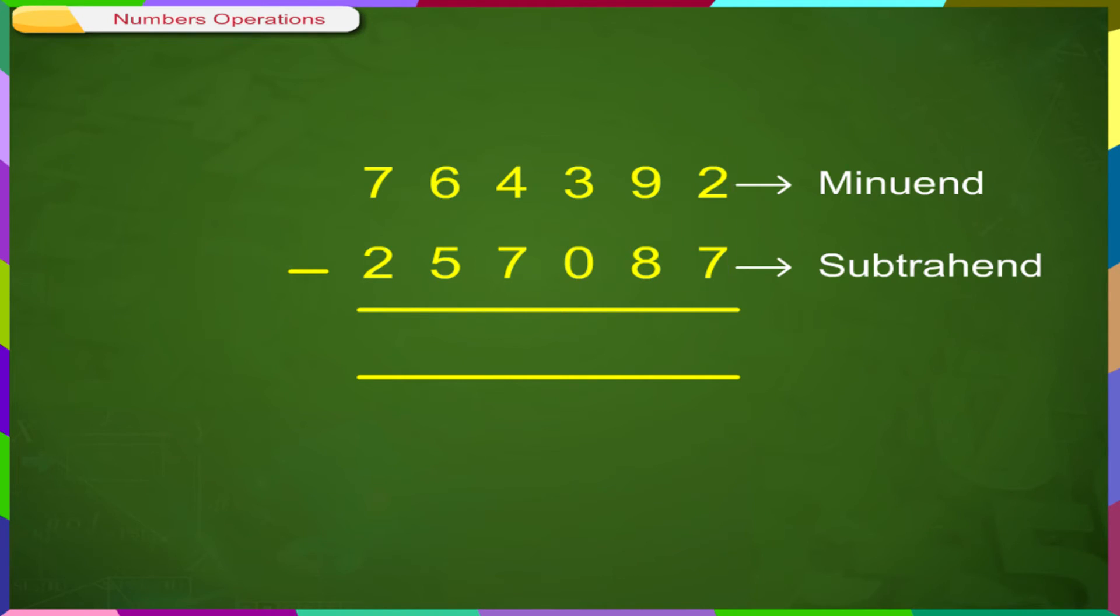Subtracting in the 1's column, 2 minus 7. 2 is smaller than 7. So, borrow from 10's place and make it 12. Now, 12 minus 7 is equal to 5.